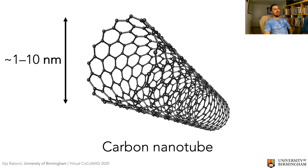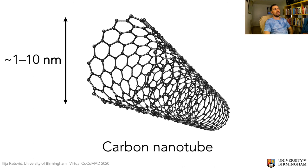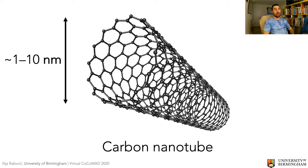If you take a graphene sheet and think of rolling it into a tube, joining it at the ends, you end up with something called a carbon nanotube — that's not actually how they're made, but it's helpful to think of the structure that way. These are made of hexagonal carbon arrangements, with a diameter of about one to ten nanometers. You can put stuff inside and attach stuff to the outside. Because of their electronic properties, they have very interesting potential applications in electronics. They're also incredibly strong longitudinally, so people are looking at alloying them with materials such as aluminium and carbon fibre to create stronger and lighter materials. This was discovered in 1991.